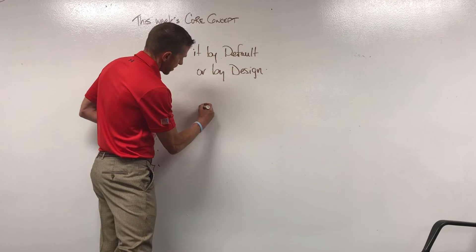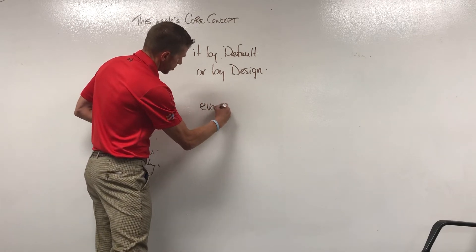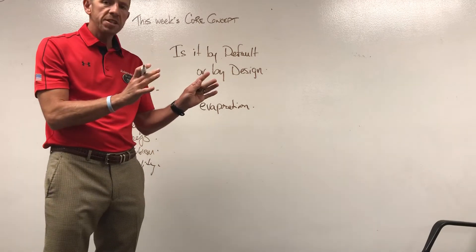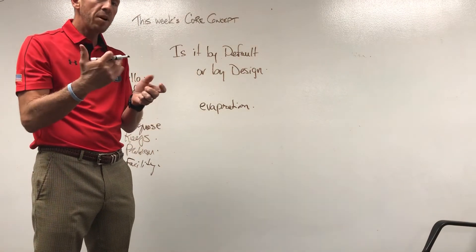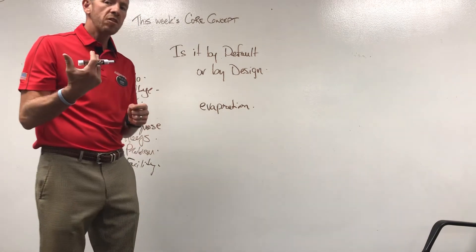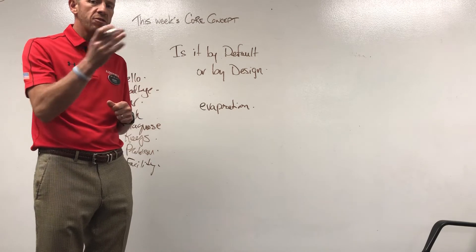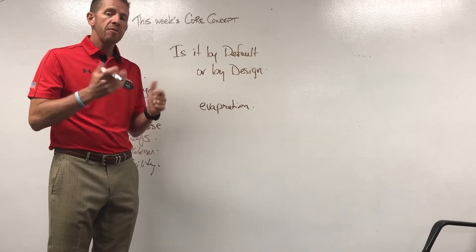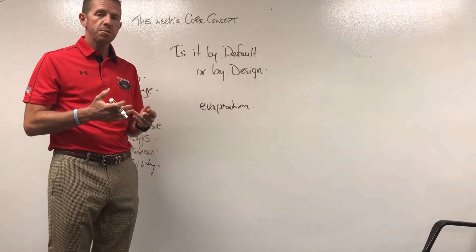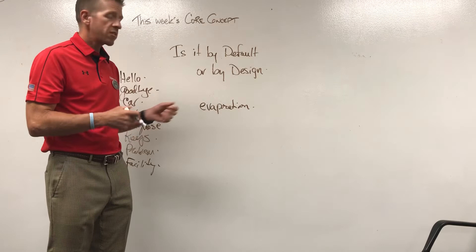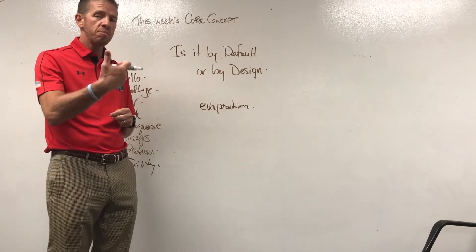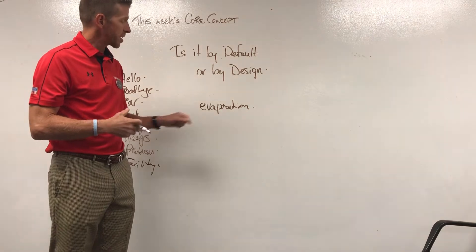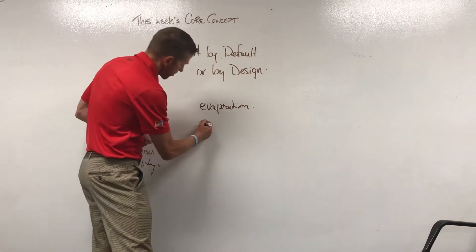So what are the two things that would make something go from by design to by default? The first is what they call process evaporation. Process evaporation is where we've implemented a process and then either pieces or the entire process simply go away. For example, when we sell cars we like to make our fixed operations — service, parts, and body shop — part of our sales product presentation. We call it a shop walk. But every once in a while we'll look and say, on the last ten customers we only gave two shop walks. What happened? Process evaporation. We get busy, we have a lot of customers, and it happens — so we have to guard against it.